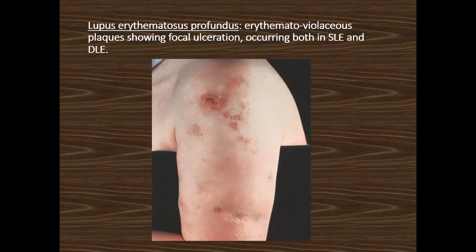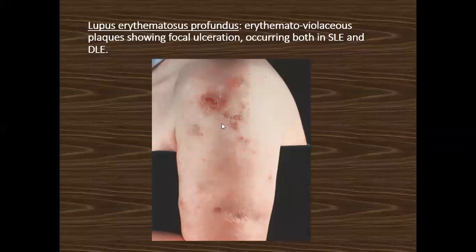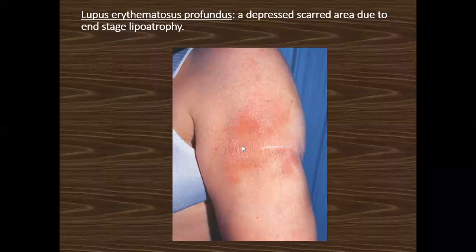This clinical appearance is seen in all paniculitis; however, the specific site helps in making a particular diagnosis — like erythema nodosum on the thighs, and cold paniculitis on the shins, thighs, and buttocks. As far as lupus profundus is concerned, it can occur anywhere on the body and is most often seen in patients already diagnosed with SLE or DLE. Depressed scarring may develop later on.